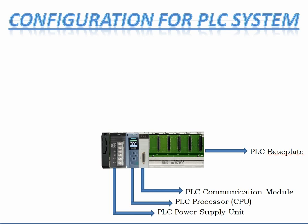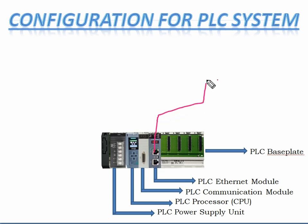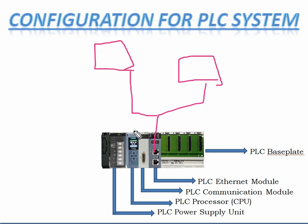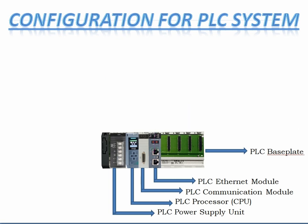Next, we will add the Ethernet module. What is the purpose of the Ethernet module? Here you can see the Ethernet port. Using this Ethernet port, you can connect to the engineering PC and the operating PC, so that this PLC can be accessed, programmed, monitored, and the process can be monitored through this communication module.